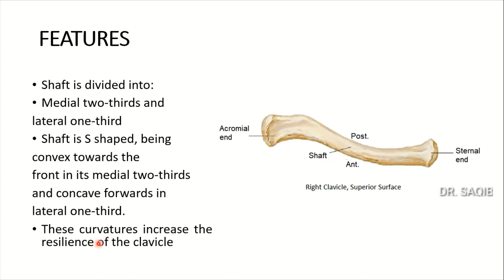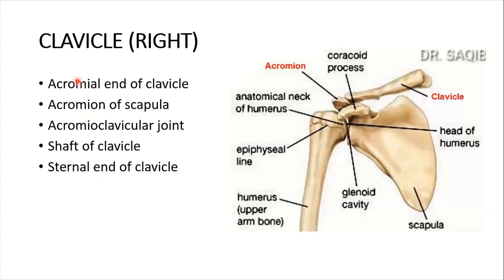This is the right clavicle. The acromial end of the clavicle and the acromion of the scapula together form the acromioclavicular joint. The sternal end of the clavicle forms a joint with the manubrium of the sternum — the sternoclavicular joint.